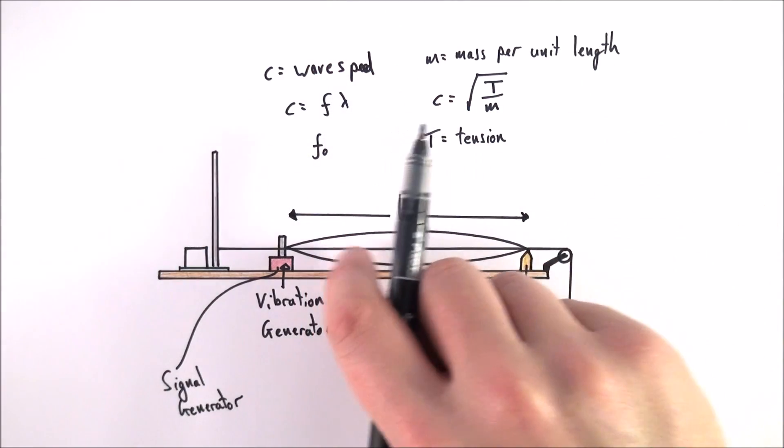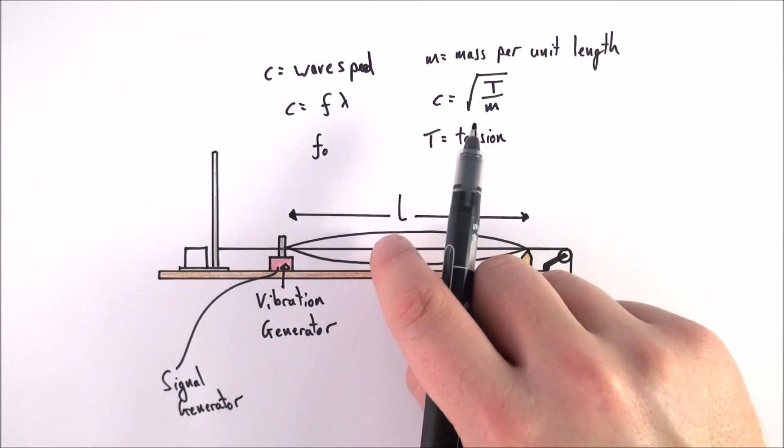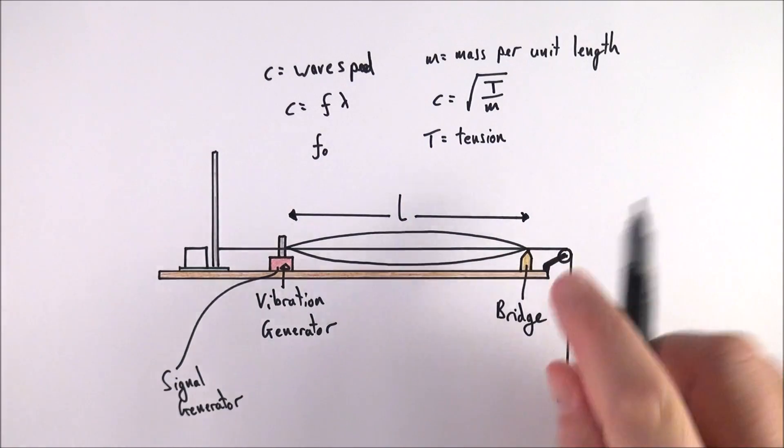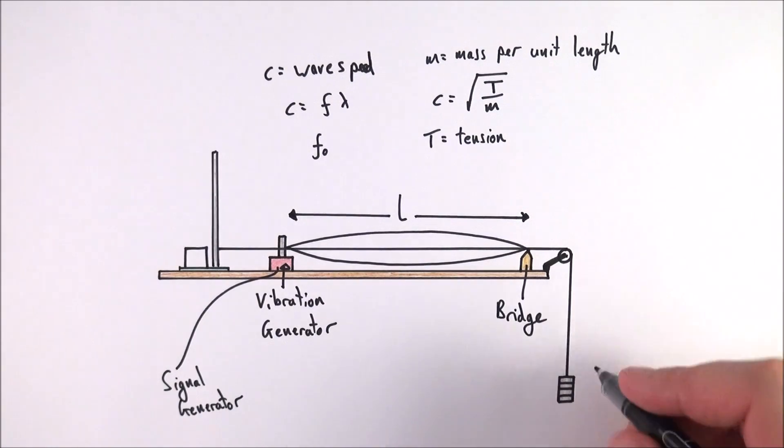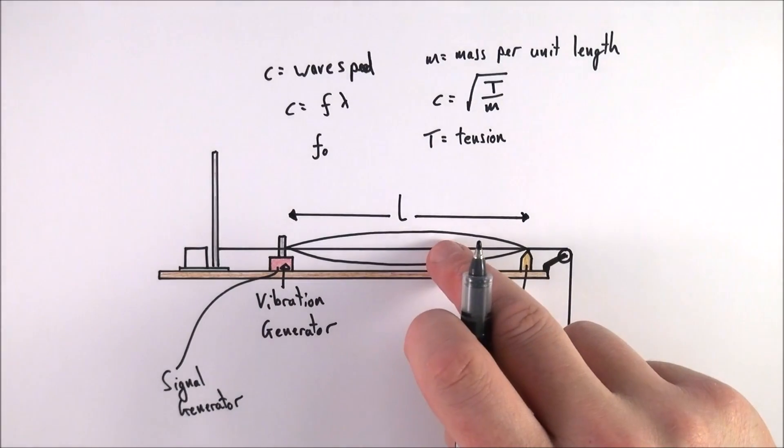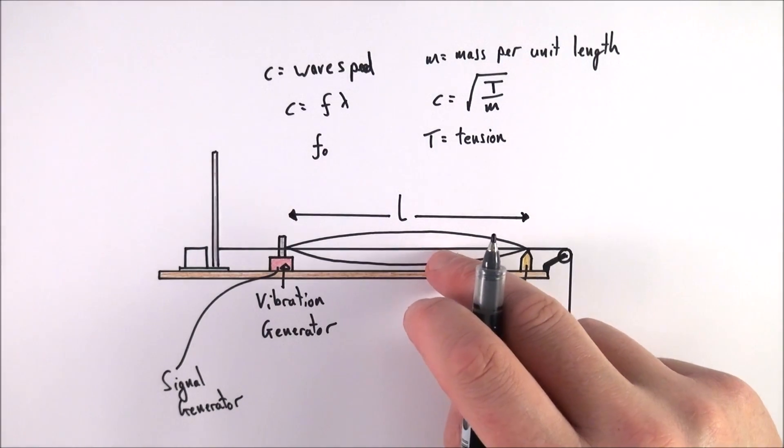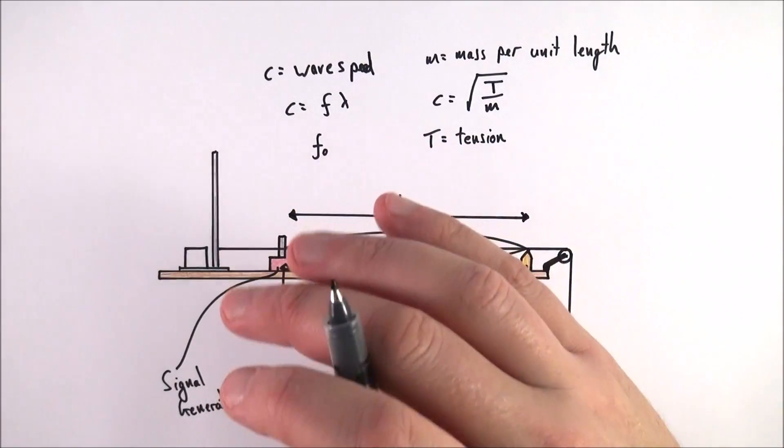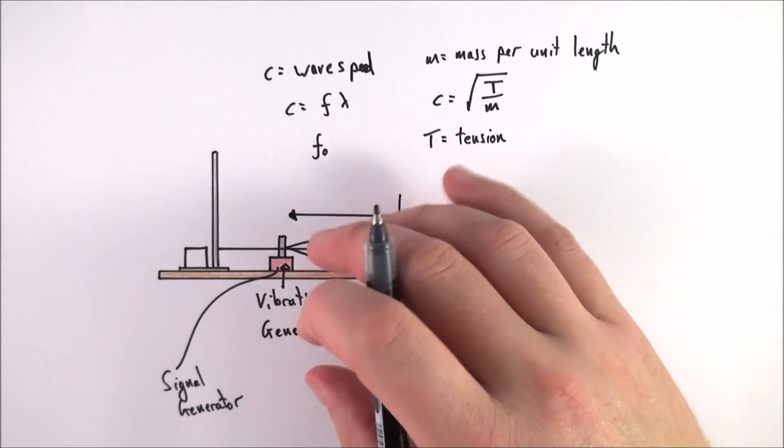This then runs over a pulley over the edge of the bench down to our mass. We can change the mass to vary the tension in this string. That's pretty much all that you need to set up this experiment. But what measurements do you need to take and how can you get some useful data from that?